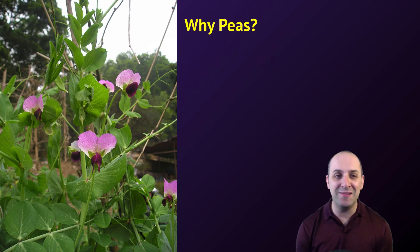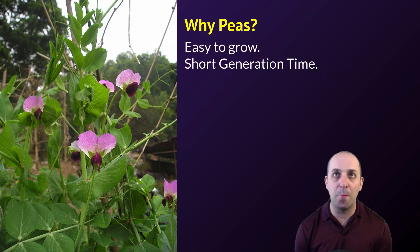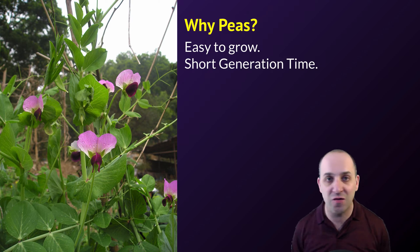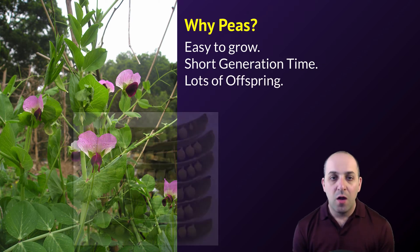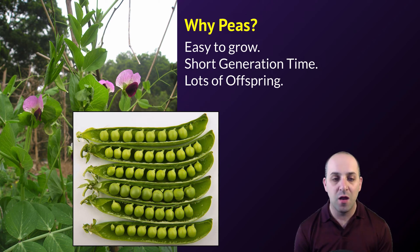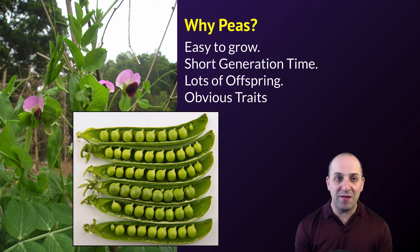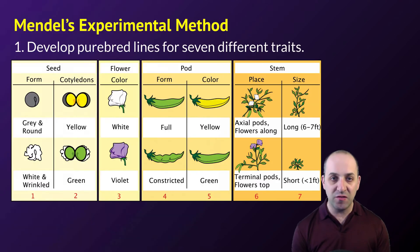Let's talk quickly about peas and why peas are a super good model organism to use for genetic studies. They're really easy to grow — you can get a bunch of them in a short period of time and have multiple generations. It wouldn't be good to do, like, elephants, because elephants have generation times of many years. They produce a lot of offspring — each one of these peas is its own offspring in the pod. You can get thousands of offspring from a plant, and they have really obvious traits, like these peas are obviously green and those flowers are obviously purple. That's basically why peas are a great choice for genetic experiments.